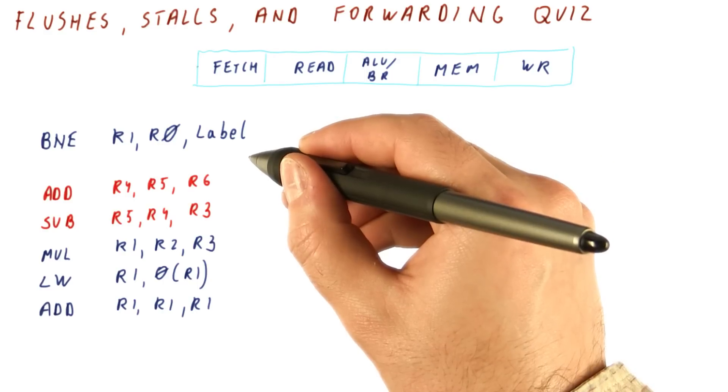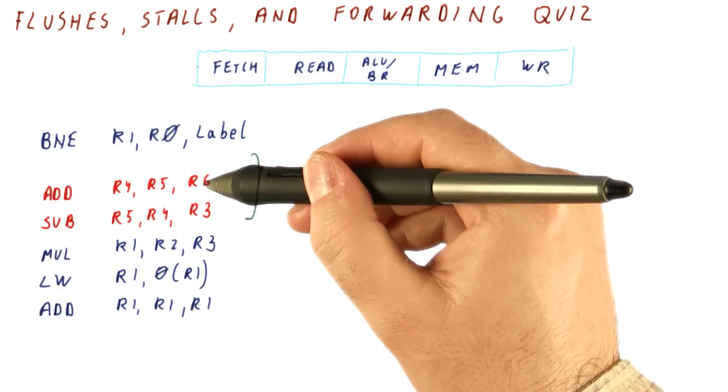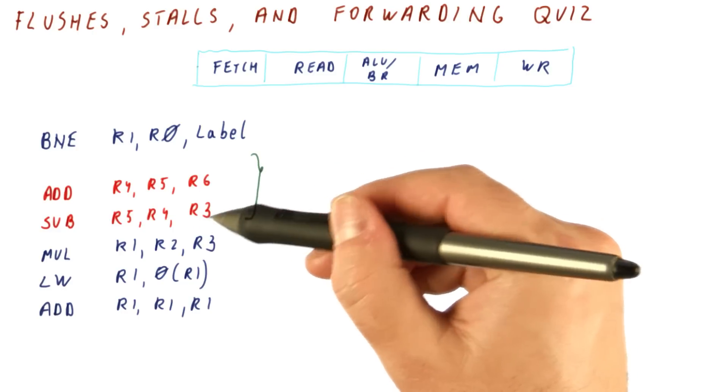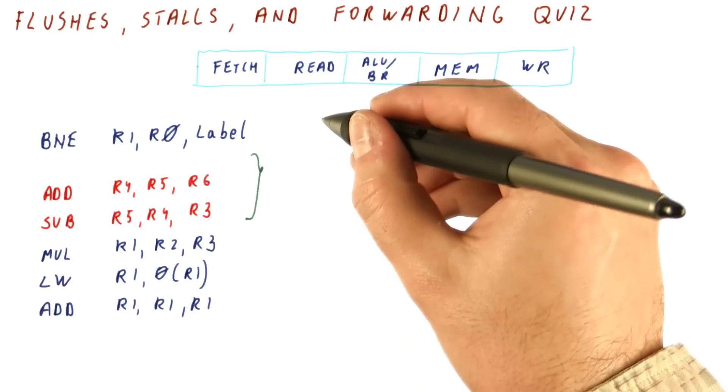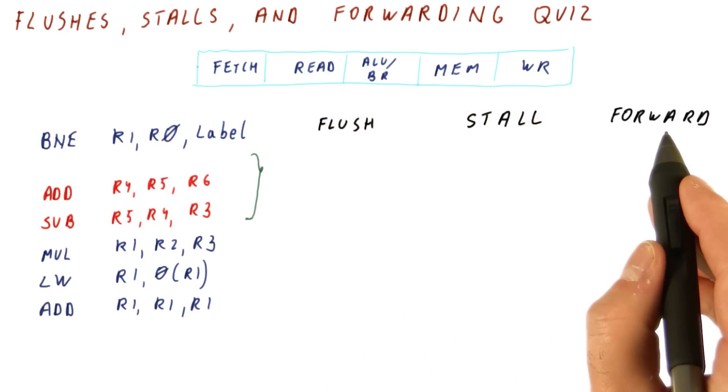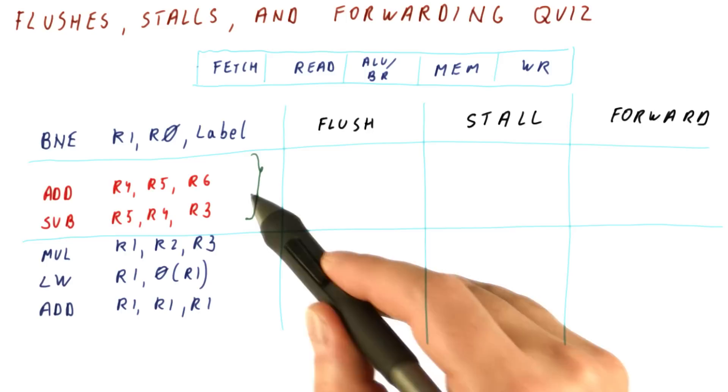Here we have some hazards. First, there is a control hazard. After the branch, we fetch two wrong instructions before we fetch the correct multiply instruction in this case. So the red ones are the ones that are fetched incorrectly. The question for you is, should we flush, stall, or forward here? Put a check mark in each of these three boxes, depending on which one we do here.